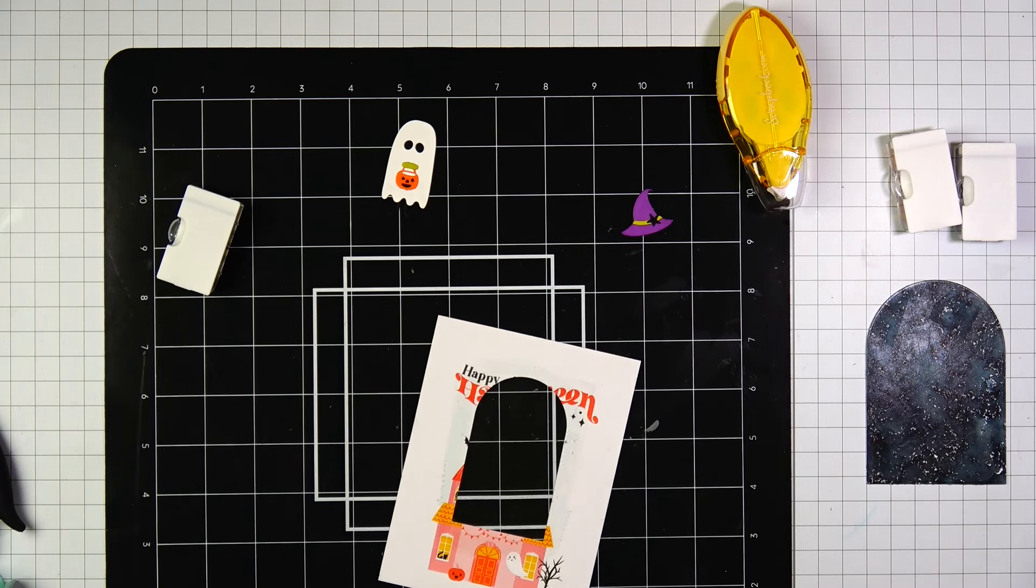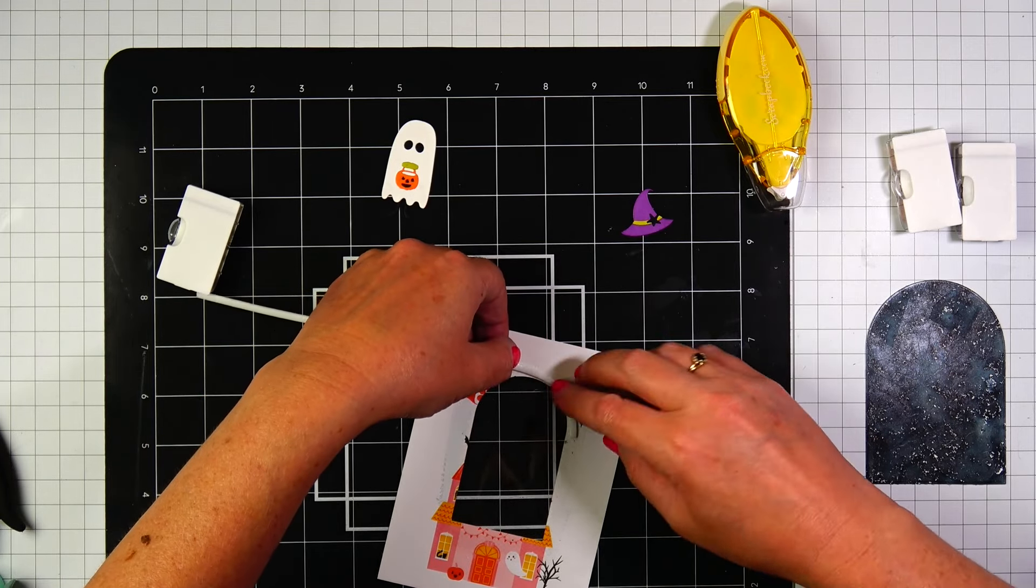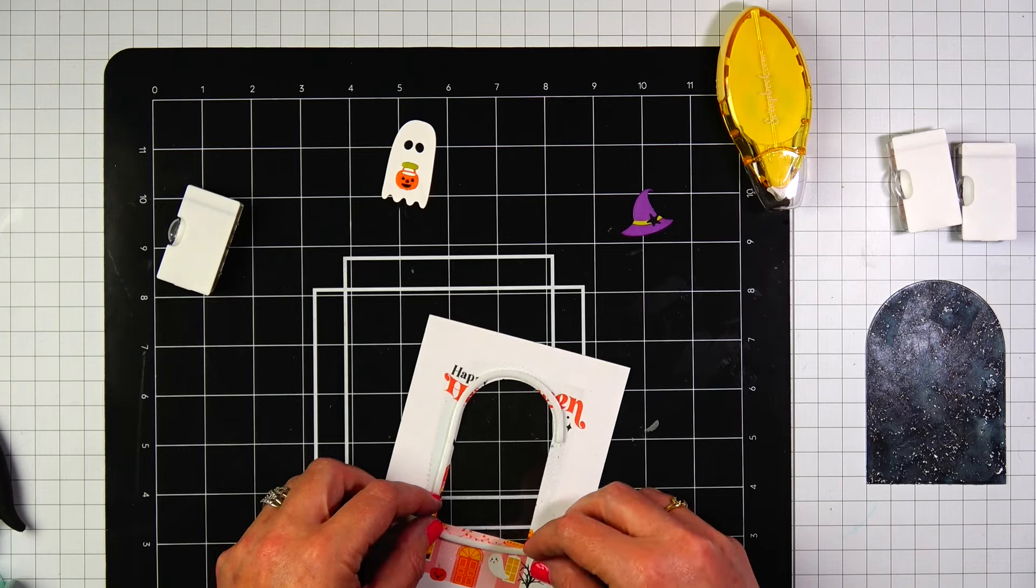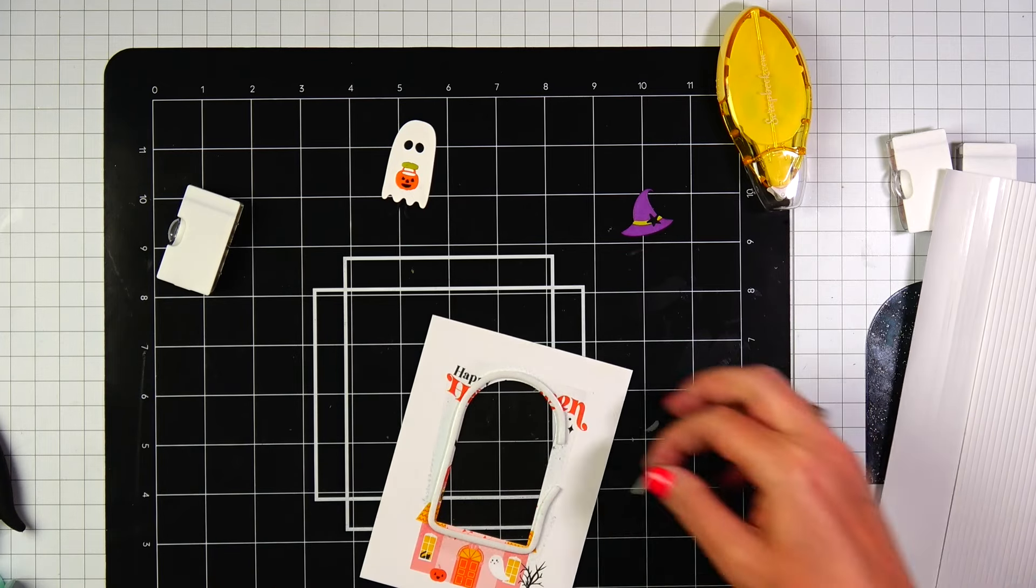And then I'm going to take a strip of 2mm foam adhesive and wrap that around the window. This is really easy to do if you just take the backing off first.